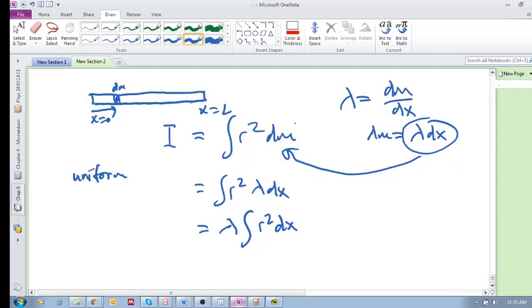then lambda being a constant or uniform means that the inertia is evenly distributed across the rod. But there are cases where it's not uniform, where lambda is actually a function of position, which means the inertia or mass changes as you move from left to right.